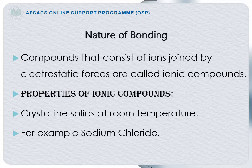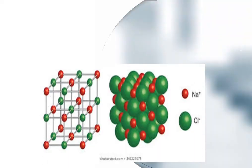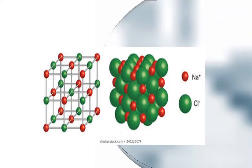Ionic compounds are crystalline solids at room temperature. For example, sodium chloride. This is the structure of crystalline sodium chloride, showing the arrangement of sodium and chloride ions. Sodium chloride forms colorless cubic crystals. Each sodium ion is surrounded by six chlorine ions, and each chlorine ion is surrounded by six sodium ions. In crystals, each ion is strongly attracted to its neighbors, resulting in a very stable structure.